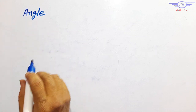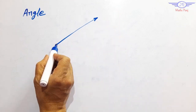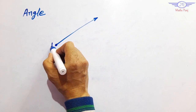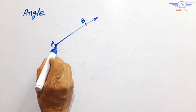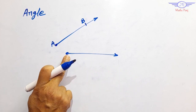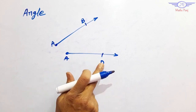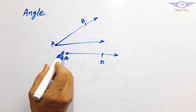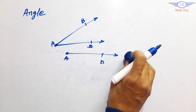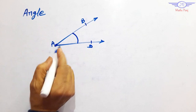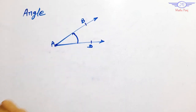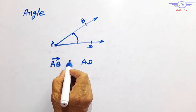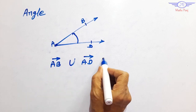Now consider: what is an angle? An angle is formed when two rays have a common end point. The first ray is AB and the second ray, sharing a common end point, is AD. So these two rays share a common end point A. The union of ray AB and ray AD forms an angle. Writing the angle, we always use the vertex in the middle — so the angle is written as BAD, where A is in the middle term. We can also write it as DAB.